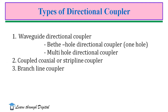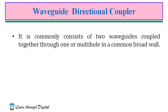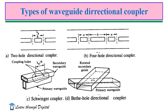Next, we will discuss the various types of directional couplers. Generally, there are three types: waveguide directional coupler, coupled coaxial or stripline coupler, and branch line coupler. The waveguide directional coupler may be a one-hole or multi-hole directional coupler. A one-hole coupler is generally called a Bethe-hole directional coupler. It commonly consists of two waveguides coupled through one or multiple holes in a common broad wall. This figure illustrates the various types of waveguide directional couplers.